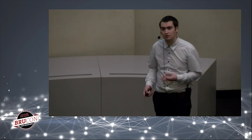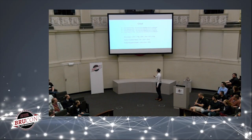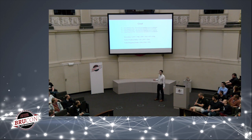Let me define what these metrics mean. True positive means we predicted malware and it is malware. True negative means we predicted normal and it was normal. False positive means we predicted normal but it was malware. Accuracy is all correctly predicted states divided by all states. False positive rate is false positives divided by false positives plus true negatives. False negative rate is false negatives divided by false negatives plus true positives.